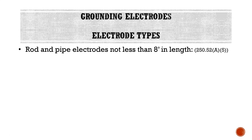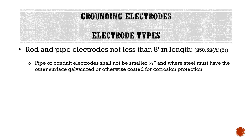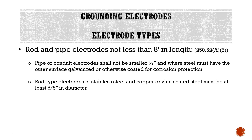A5, our rod and pipe electrodes: not less than 8 feet in length. Pipe or conduit electrodes shall not be smaller than 3/4 of an inch, and where steel, must have the outer surface galvanized or otherwise coated for corrosion protection. So if it's a pipe or conduit, it has to be at least 3/4 inch in size, at least 8 feet long, and have some kind of coating to protect it from corroding. Rod-type electrodes of stainless steel, copper, or zinc-coated steel must be at least 5/8 of an inch in diameter, made or coated with something corrosion-resistant, and at least 8 feet long.